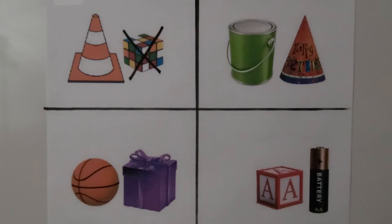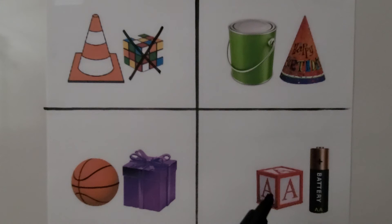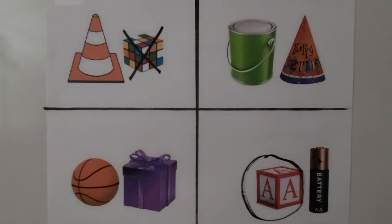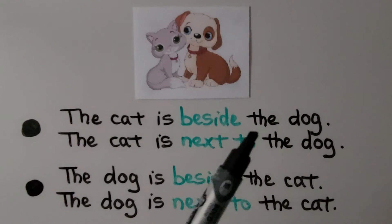Which cube is next to a cylinder shape? Do you see a cube that's next to a cylinder shape? We need to draw a circle around the cube that is next to a cylinder shape. If you said this cube, you're right. This alphabet block is shaped like a cube, and this battery is shaped like a cylinder. We need to put a circle around this alphabet block.